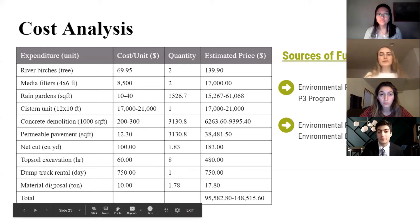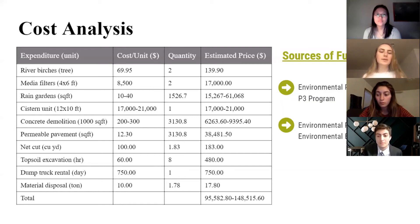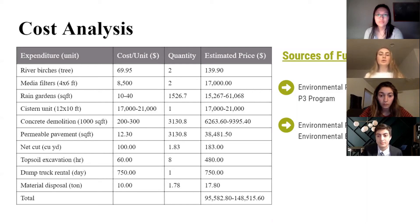To further prove the feasibility of our proposal, a cost analysis was completed. These costs will be minimized wherever appropriate, such as using the cut soil for filling. Average costs for each proposed change were researched, and based on the quantity recommended, the total price for each expenditure was calculated as seen in the final column on the right. While the price range is wide, the overall cost is low for the amount of positive environmental impact our proposal will induce. We also conducted research on sources of funding — notably, the EPA has two programs, the P3 and the Environmental Education Grant, through which college students may obtain funding for eco-friendly initiatives.